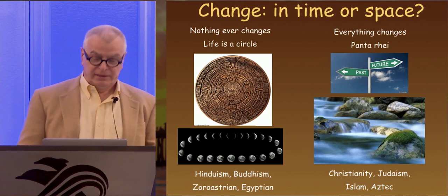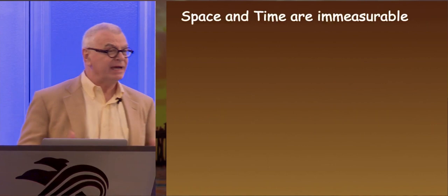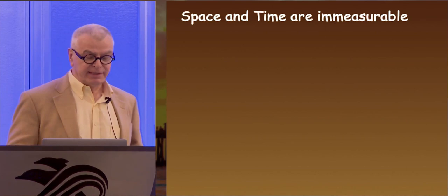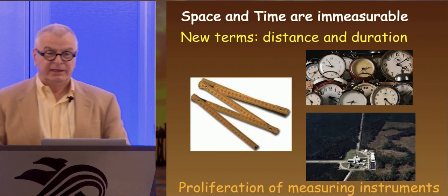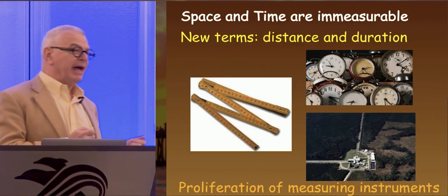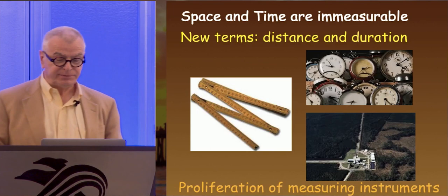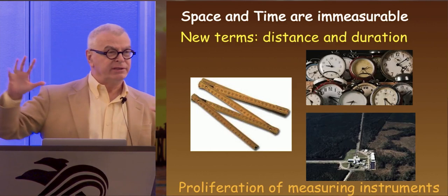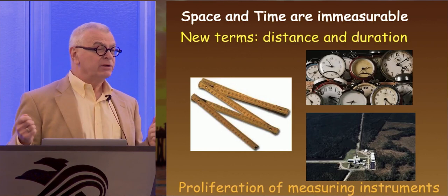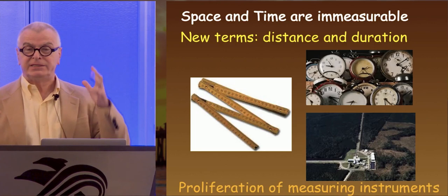The problem with these concepts is that they are immeasurable. You cannot measure space or time. If you would like to measure them, you have to convert them into something. When science came in, they invented instruments. Once you have a rod, once you have a clock, you can measure duration and distance.